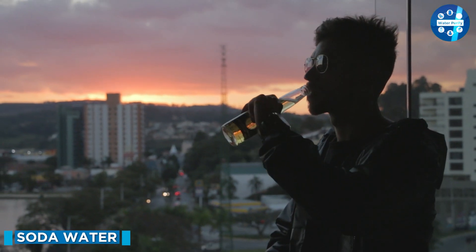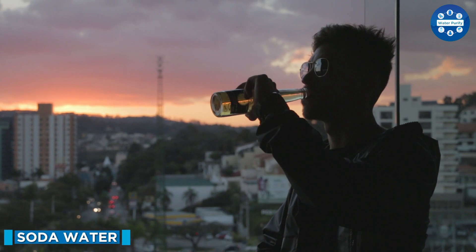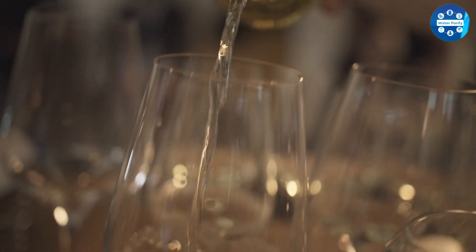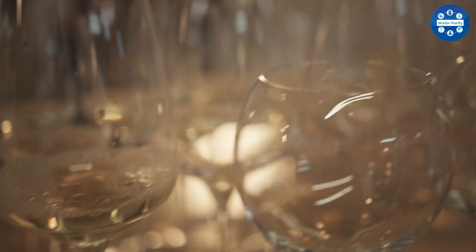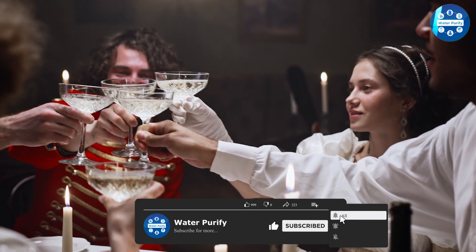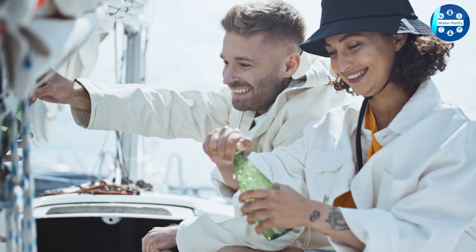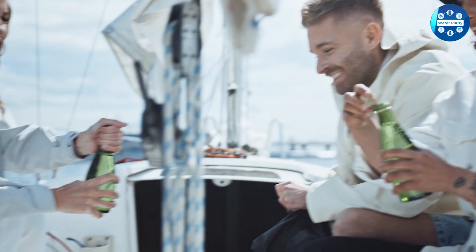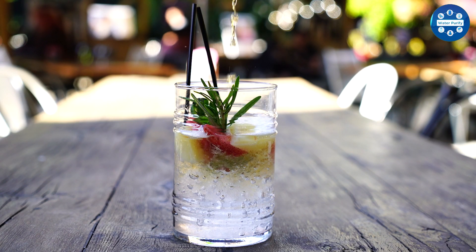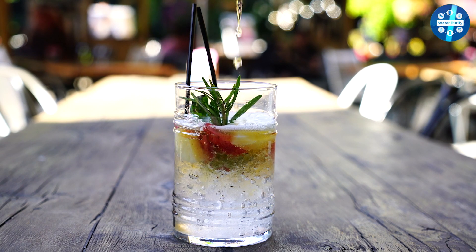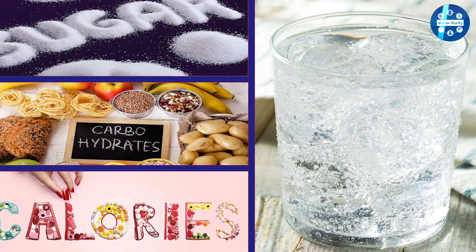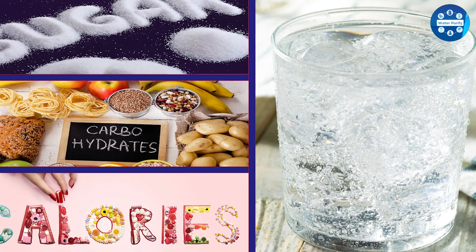The term soda water is an ambiguous one because it has been in usage for a long time and people use it to refer to different beverages. Soda water was the name people first gave to commercially available artificially carbonated water during the late 18th century. At present, some use it to refer to club soda, while some use it to refer to seltzer. Soda water is basically plain water containing some minerals and dissolved solids, including sodium bicarbonate, sodium phosphate, and sodium citrate.